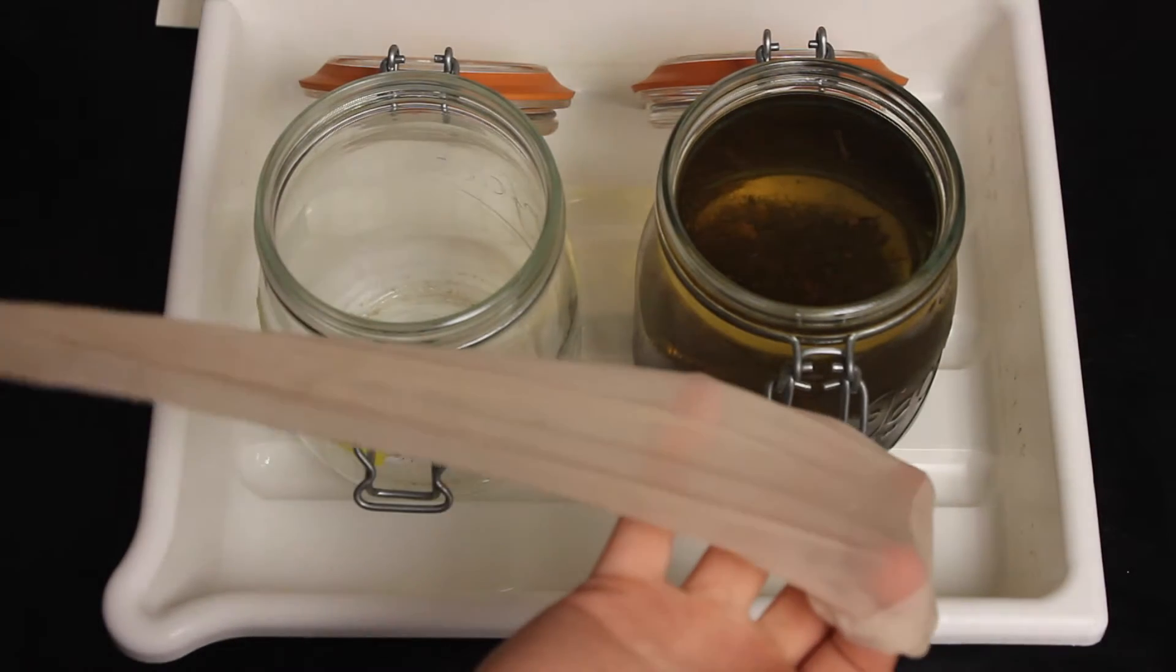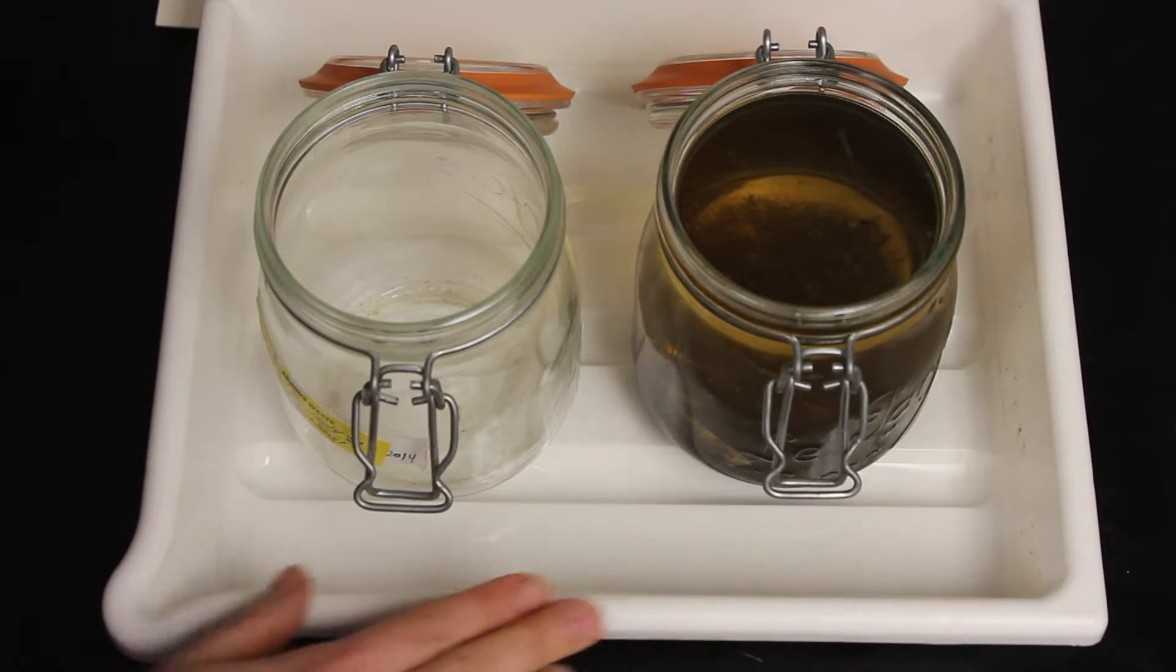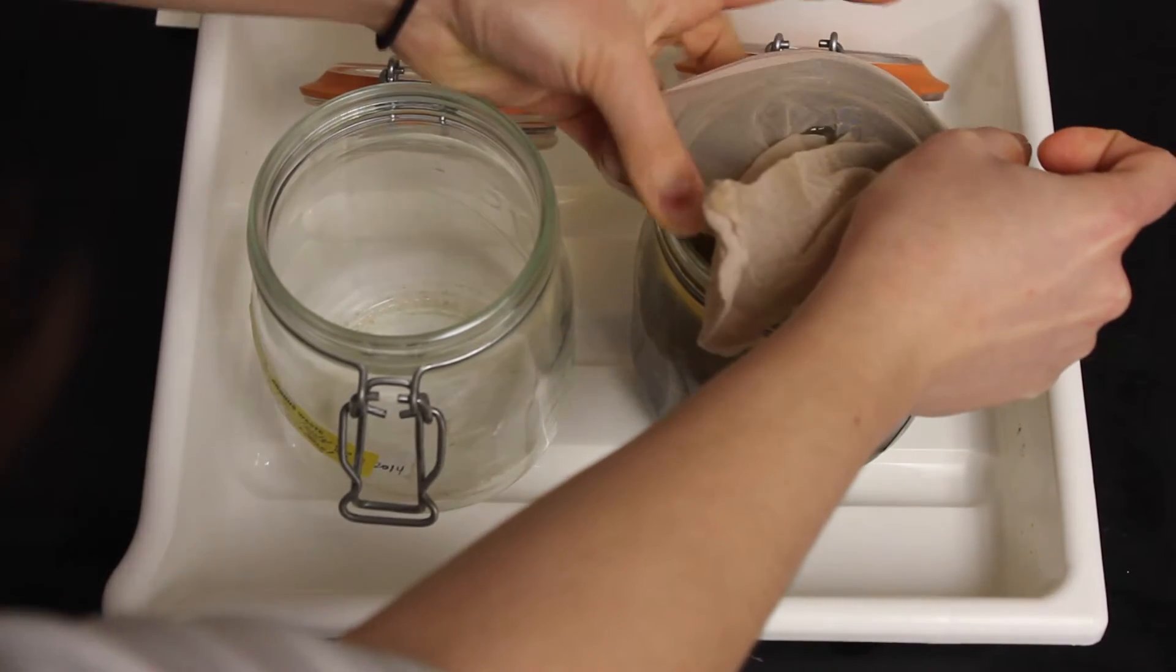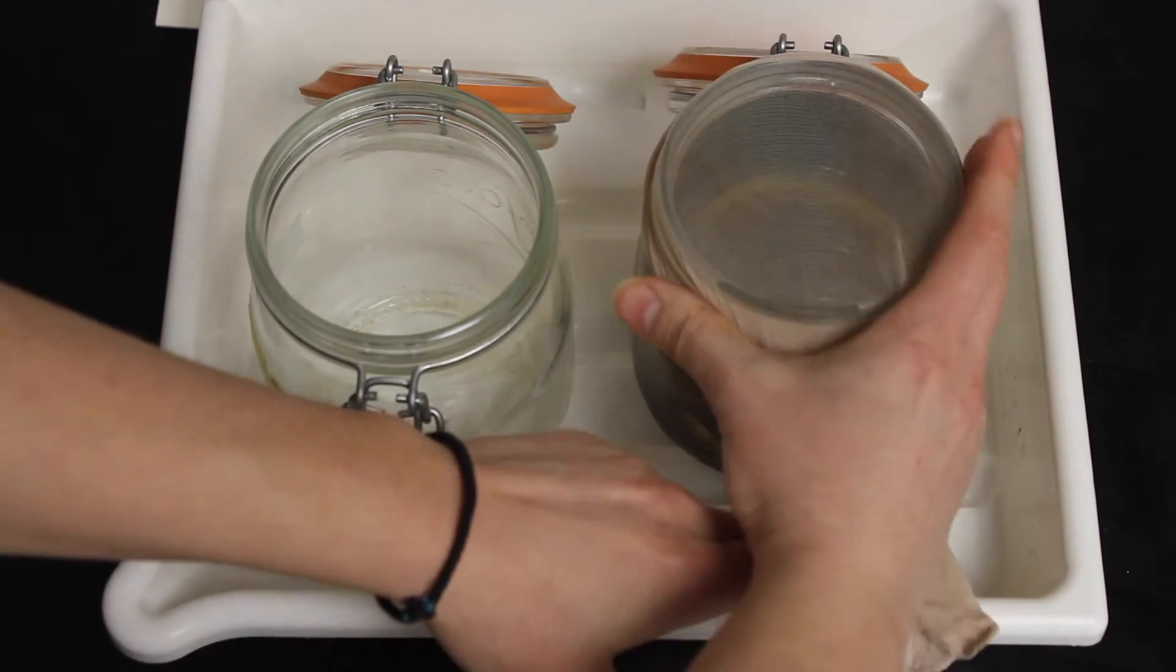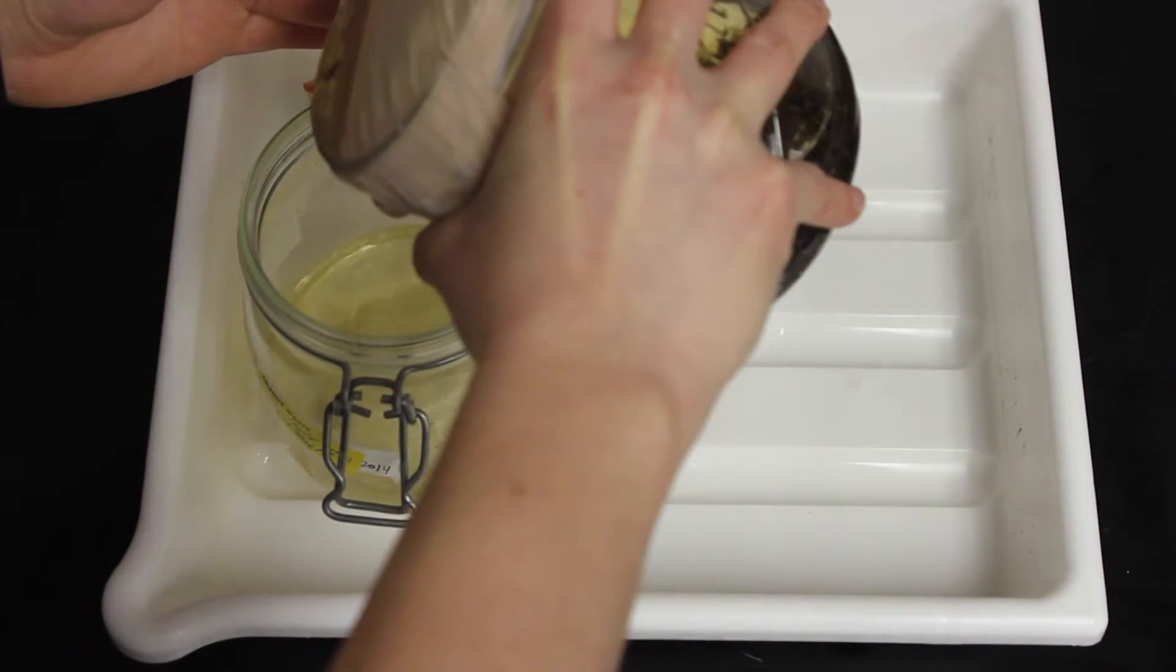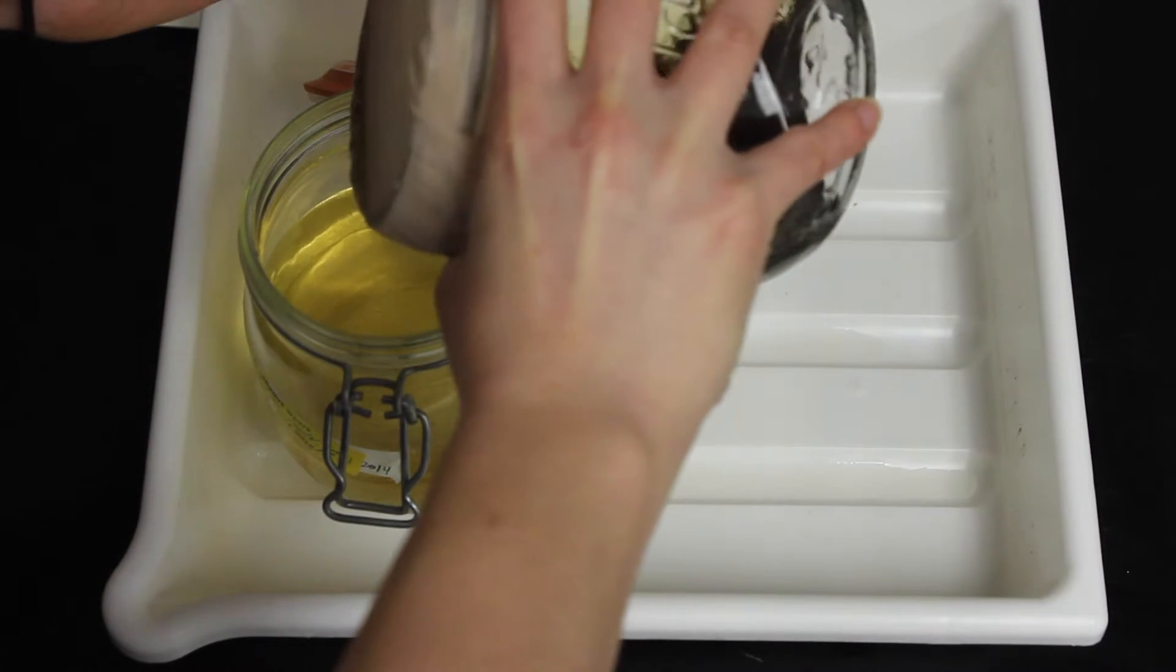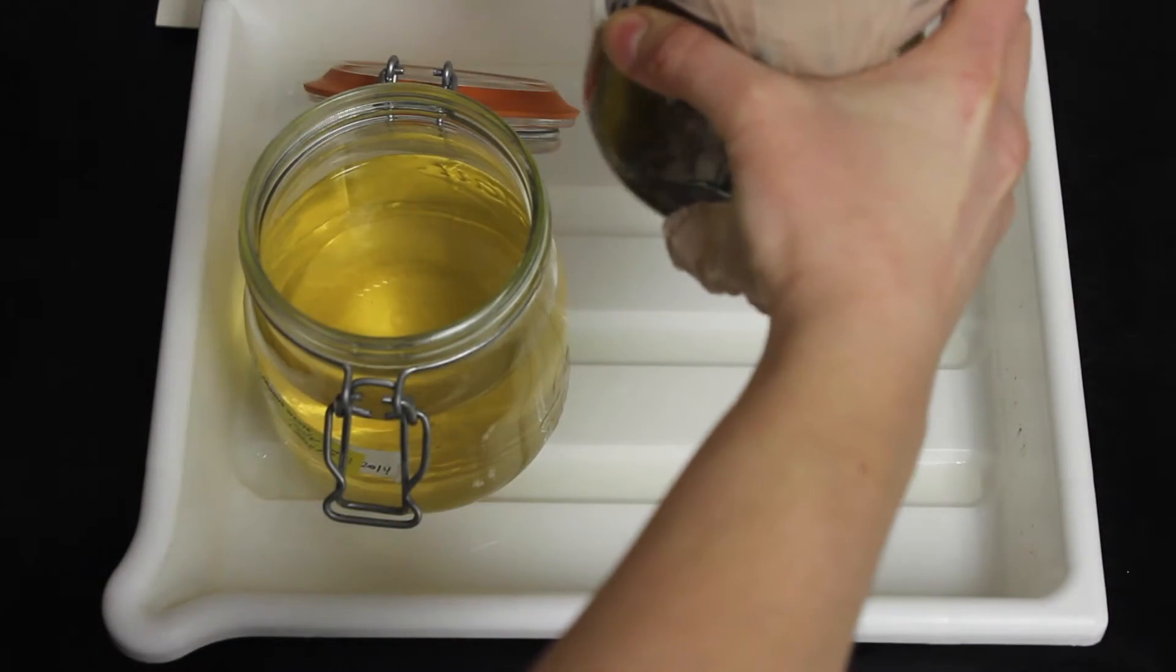And we use pantyhose to make sure that none of our specimen escape. Additionally, we're going to place them inside our large sorting tray so we don't make a mess just in case the ethanol spills. So first, we're going to place the pantyhose over the lip of the jar. Making sure that it's nice and tight across. Just like this. Then, we're going to pour it inside our waste jar. Get a little bit more. That's a good enough amount.